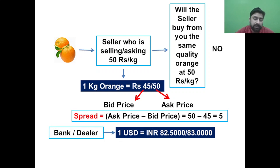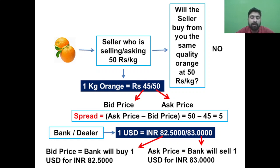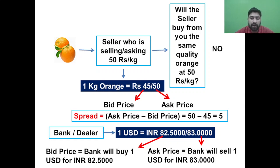Similarly, if a bank quotes: 1 USD = INR 82.500 / 83.000, the bid price is ₹82.500 — the bank will buy 1 USD for INR 82.500. The ask price is ₹83.000 — the bank will sell 1 USD for INR 83.000. The ask price is always more than the bid price — this is very important to always remember.